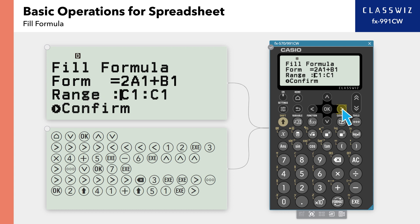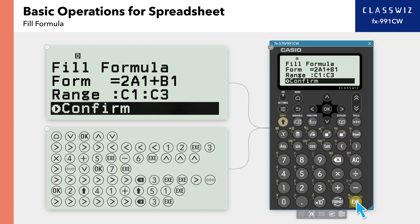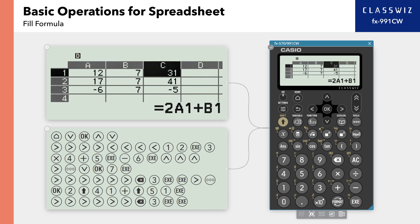For Range, input the range C1 to C3. Move the cursor to confirm and press Execute. Now, the result of 2 times value of cell A plus value of cell B is output in cells C1 through C3.